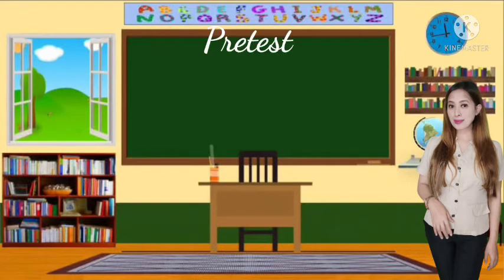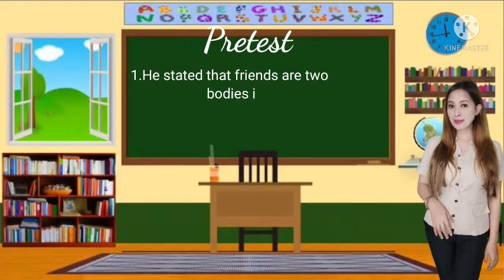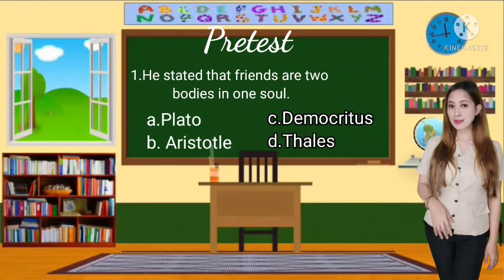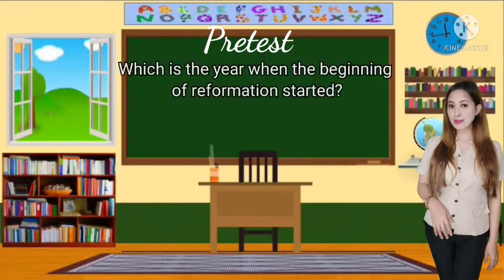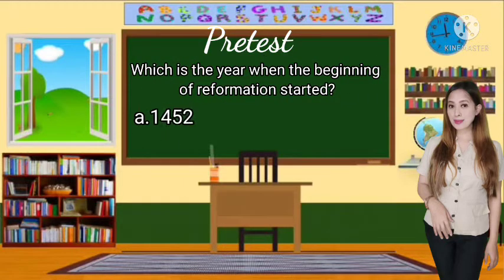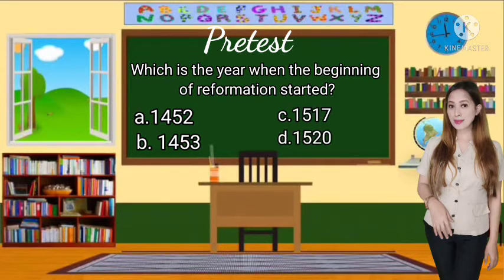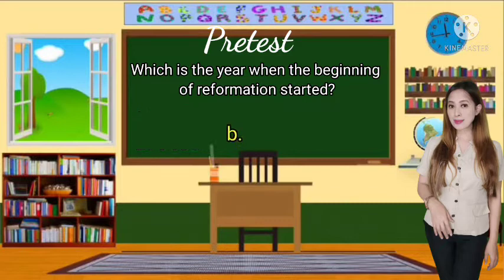Let's go over some questions from your pre-test. Question 1: Which of the following stated that friends are two bodies with one soul? A. Plato, B. Aristotle, C. Democritus, D. Thales. The correct answer is Letter B, Aristotle. Question 2: Which year did the Reformation begin? A. 1452, B. 1453, C. 1517, D. 1520. The correct answer is Letter B, 1453.